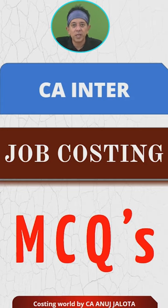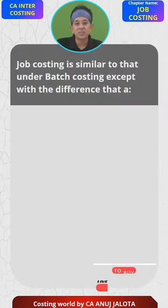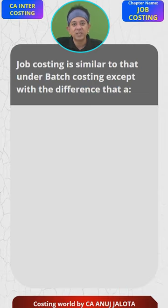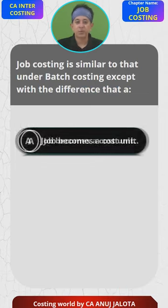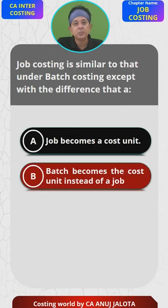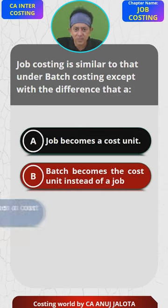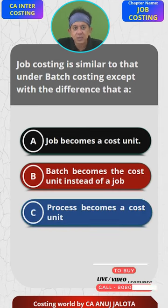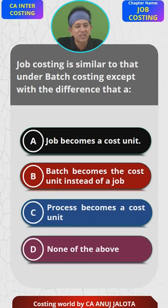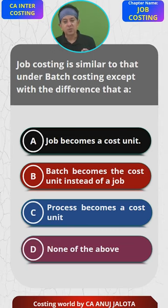The question for today is: 'Job costing is similar to batch costing except with the difference that...' The four options are: A — a job becomes a cost unit; B — a batch becomes a cost unit instead of a job; C — a process becomes a cost unit; and D — none of the above. The answer is very obvious, but I would still like to explain it.